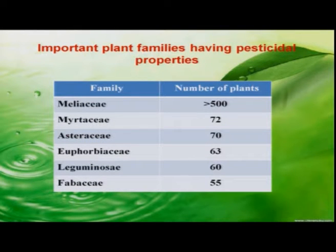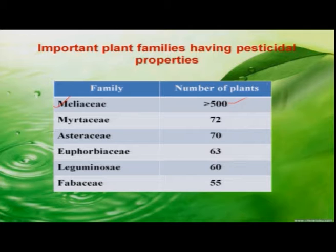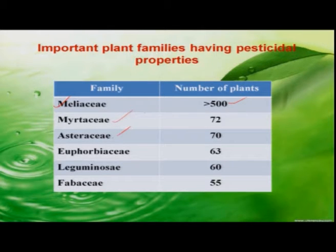Let us see which are the families that actually contain the principal insecticidal components in plants. The first is Meliaceae, which consists of more than 500 plants known to contain the principal insecticidal products. Similarly, Myrtaceae, Asteraceae, and so on and so forth.